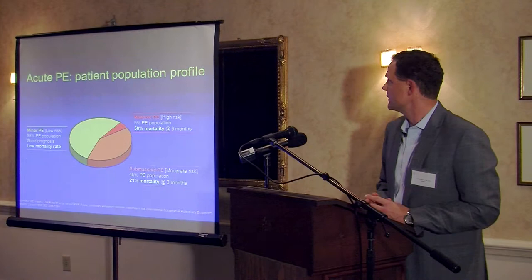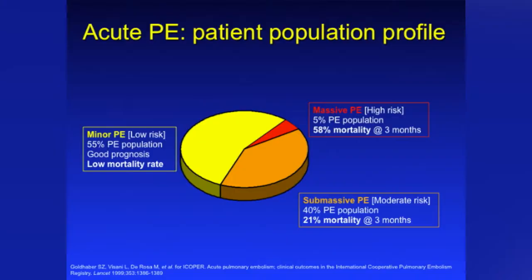Looking at the patient population profile, the vast majority of patients — about 95 percent — will have either a minor PE or a sub-massive PE. Minor PE patients have a low mortality rate and good prognosis. Sub-massive PE patients can have a 21 percent mortality at three months. Massive PE, which is 5 percent of the population, can have up to 60 percent mortality at three months — a very deadly disease.